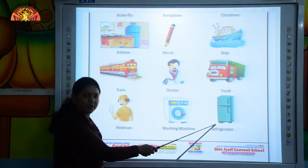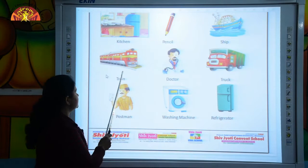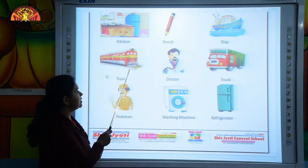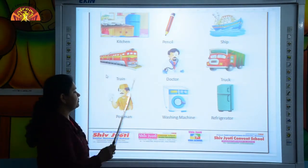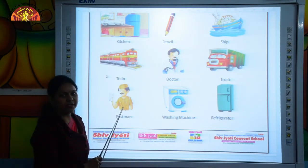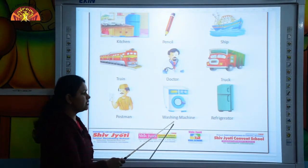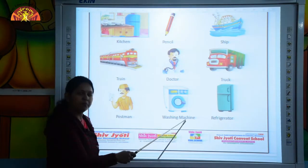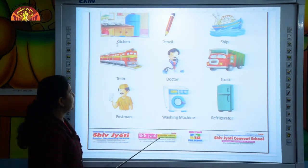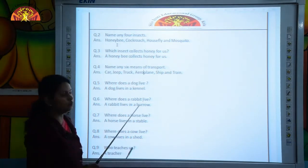This is a refrigerator. This is the picture of a train. He is a postman and this is a washing machine. So kids, now our next question is question number 2.